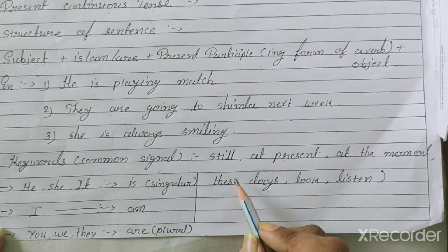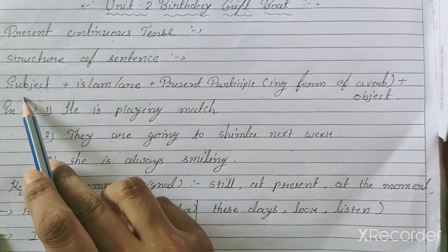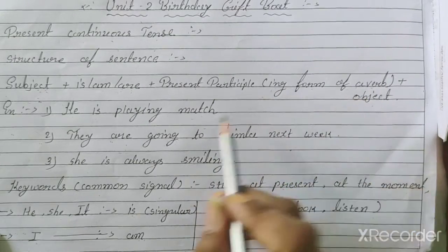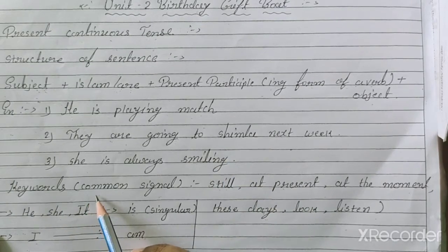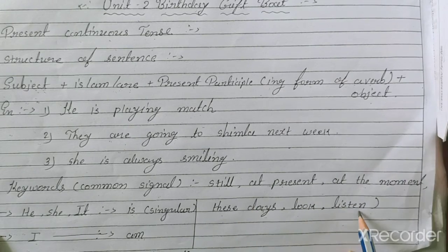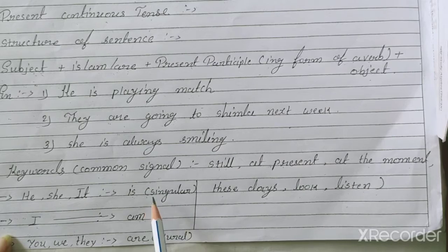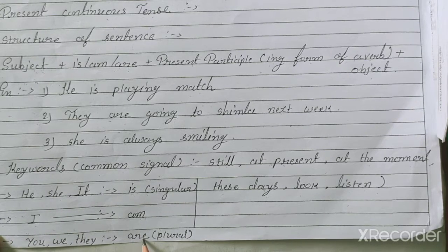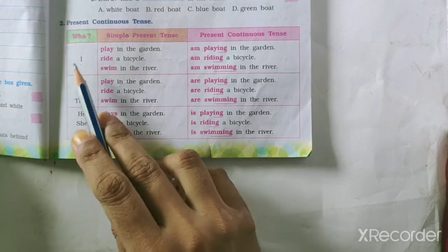I hope you all understood the rules of present continuous tense. Let me revise the structure again: Subject + is/am/are + present participle (ing form) + object. He is playing match. They are going to Simla next week. She is always smiling. Keywords: still, at present, at the moment, these days, look, listen. He/she/it → singular → is. I → am. You/we/they → plural → are.